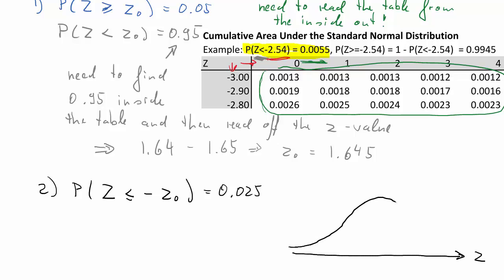Again, we shall first sketch. We first need to understand the problem. Here's our PDF centered around zero. And now we want the probability that something is smaller than a certain value, negative z0. And that probability is 2.5%. So that negative z0 has to be a negative value.